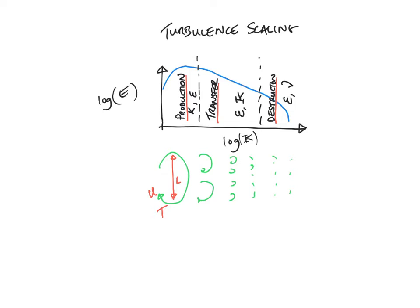So this one is called the Integral Scale, because it's where the majority of the energy is represented in the Turbulence Cascade, and the smallest one is referred to as the Komogorov length scales. And it's at this scale that the Turbulence is destroyed and becomes heat.